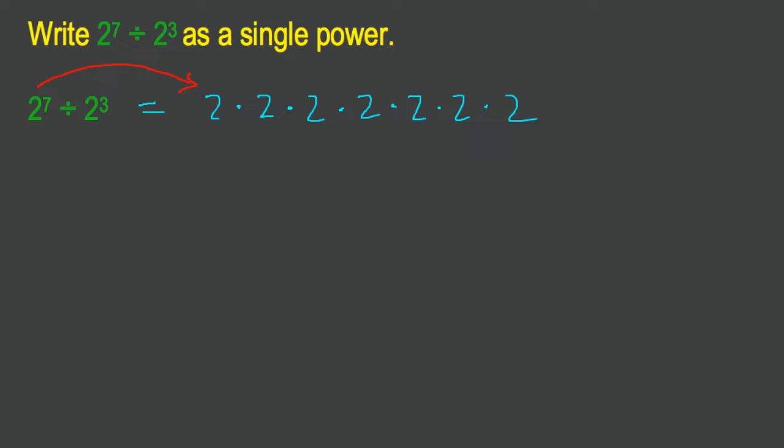Then what we're going to do is draw a big long division bar to show the division, and we're going to expand the 2 to the exponent 3 underneath: 2 times 2 times 2. So our 2 to the exponent 3 is this right here. That's the expansion of the two powers.